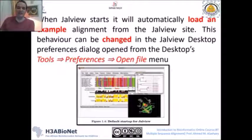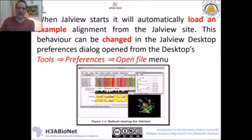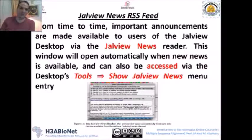At the beginning of JalView, you always see an example project that helps you understand and see different features of JalView. If you would like to open or not open this project every time, you can change this from the Tools menu, then Preferences, then Open File — check or uncheck the option. You can also choose whether to see the news from Tools, then Show JalView News.